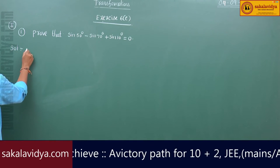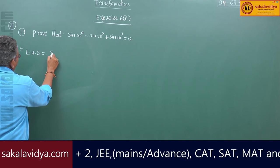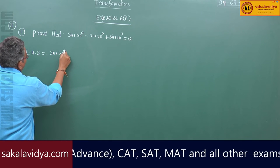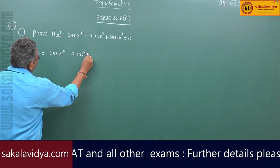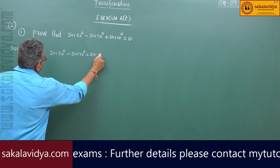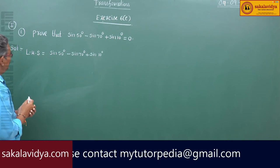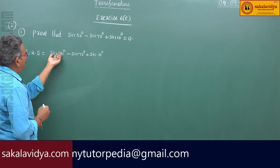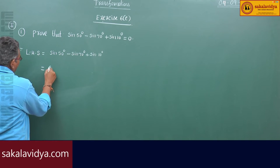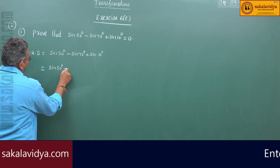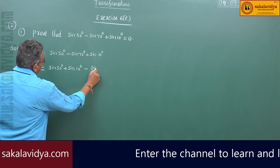Take the left hand side: sin50° minus sin70° plus sin10°. Let us rearrange the terms: sin50° plus sin10° minus sin70°.